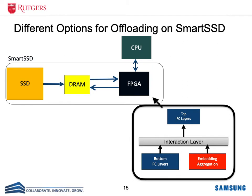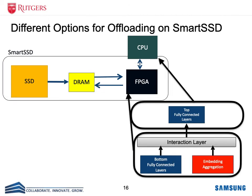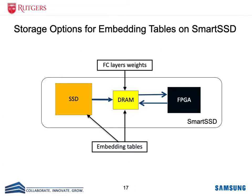For a smart SSD, there are various options to offload computation to the FPGA. For example, all layers including fully connected layers and embedding table aggregation can be offloaded to the FPGA. Alternatively, we can offload computation partially — for example, the bottom layers to the FPGA and the top layers performed by the CPU. There are also two storage options: for a smaller embedding table we can use the FPGA DRAM, and for a larger embedding table we can use the SSD, which has higher storage capacity.